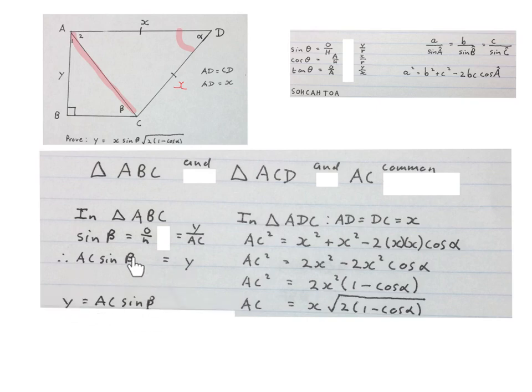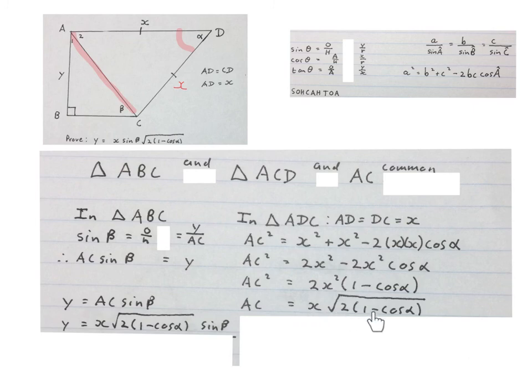We just rewrote the equation from there. Replace the value of AC into the place of AC. Just rewrite it in the right order the way they asked us. They asked us to prove that Y equals to this and there we have it. Please stop the video and get your brain around this one.